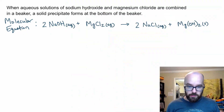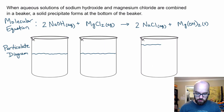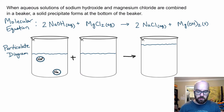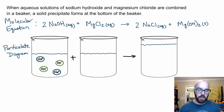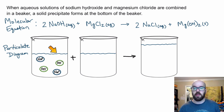Let's start with our particulate diagram. I'm going to use three beakers — two for the reactant solutions and a third for the products. In our first beaker we've got sodium and hydroxide ions. I'll draw two sodiums and two hydroxides using little ovals with the ion name inside. If you have different colors, that's a good way to do it, though on the AP exam you won't be able to write in different colors.